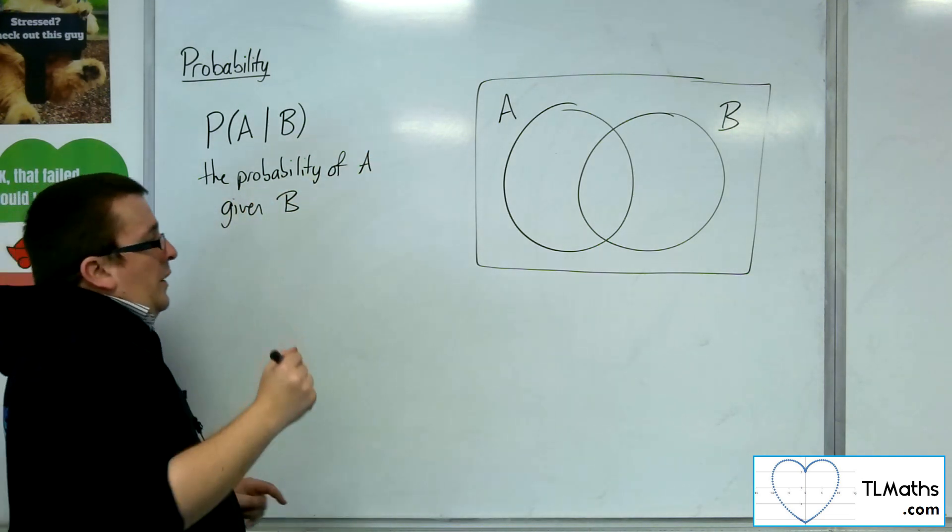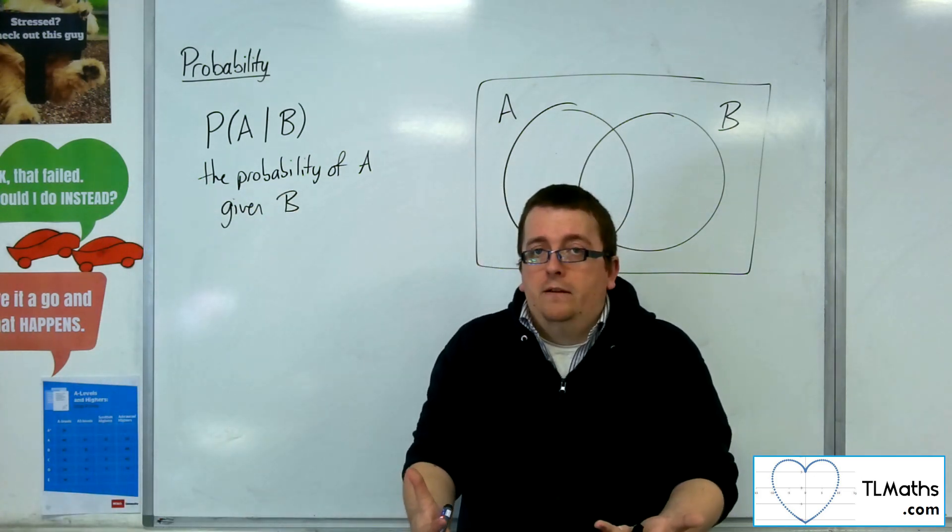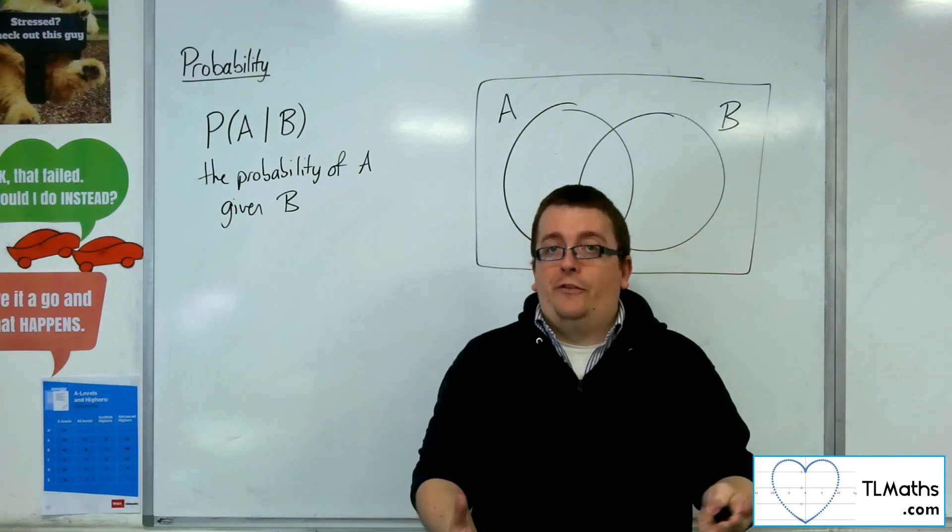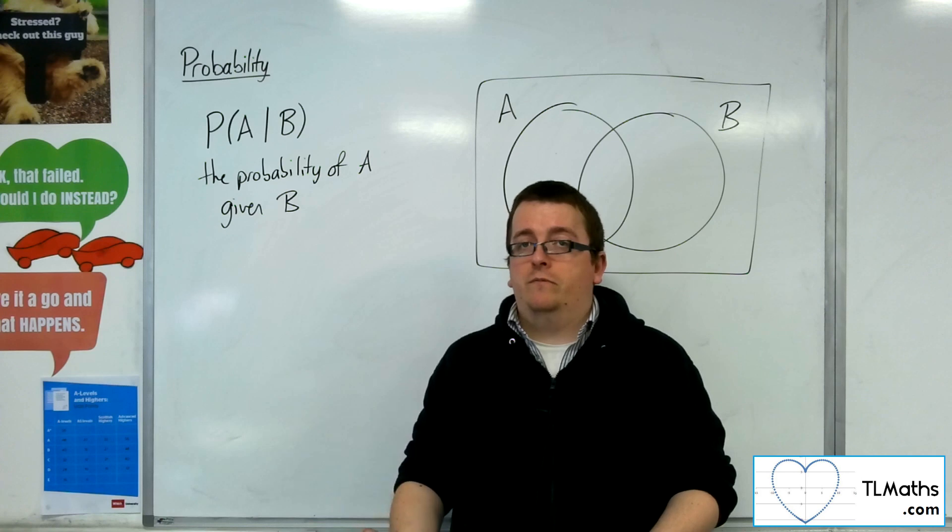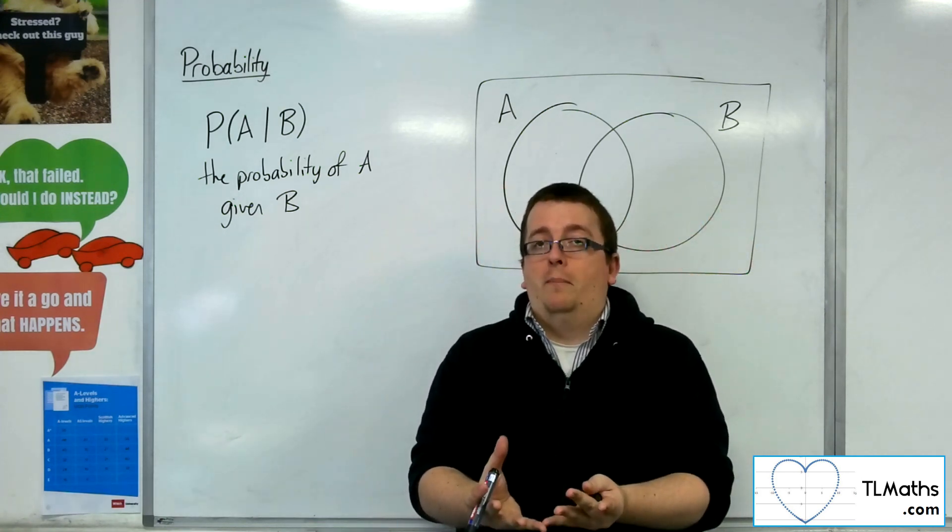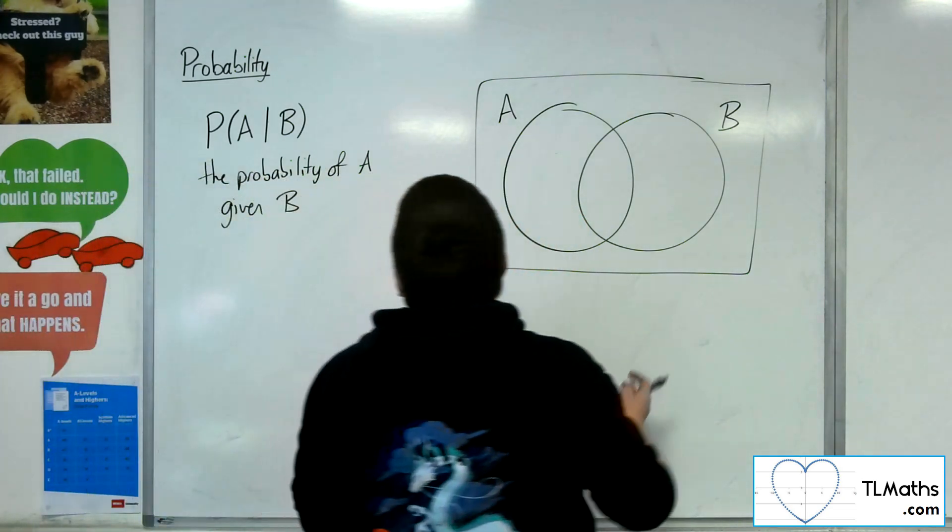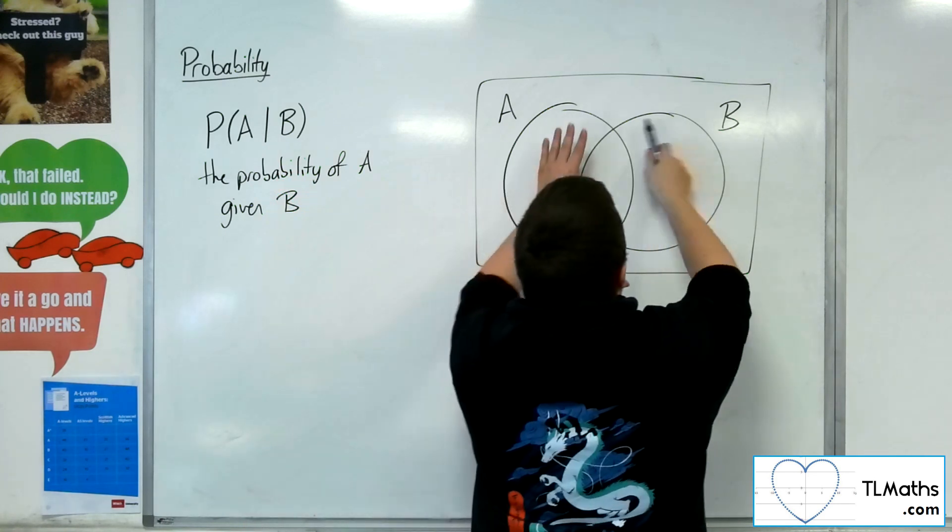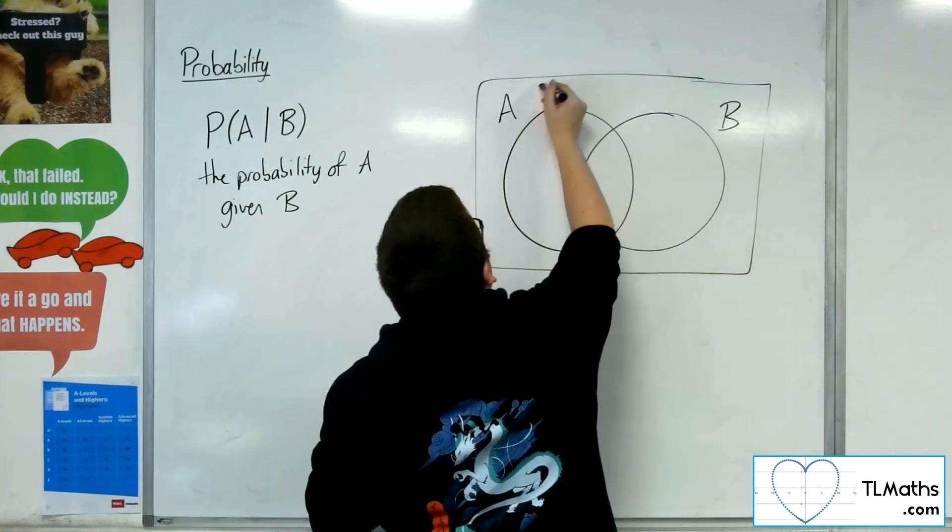So given that B, that we know B has happened, given that we know that we are picking from the math students, what's the probability of picking an English student? So given that we know it is in B, what's the probability of getting A? So the idea is that if I know that we are given that we're starting with B, then I can ignore anything else.